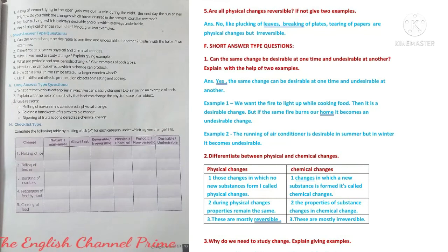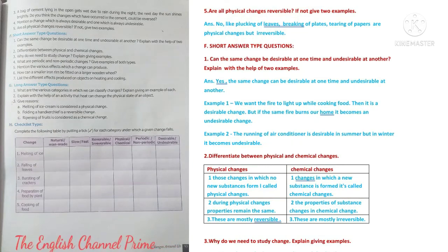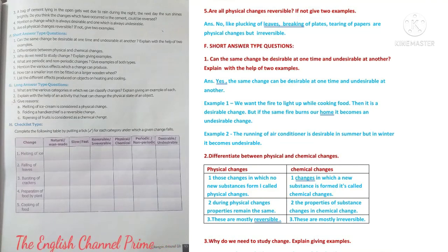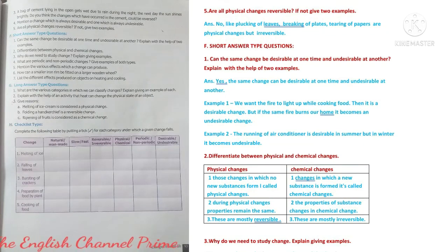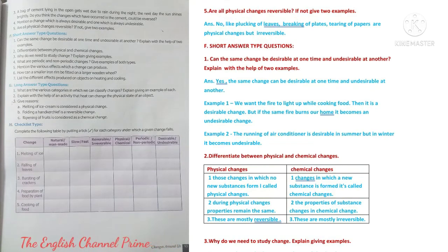Section F — Short answer type questions. Question one: Can the same change be desirable at one time and undesirable at another? Yes, the same change can be desirable at one time and undesirable at another. For example, we want fire to light up while cooking food — then it is a desirable change — but if the same fire burns our belongings or our home, it becomes an undesirable change. Second example: running an air conditioner is desirable in summers but in winter it becomes undesirable.